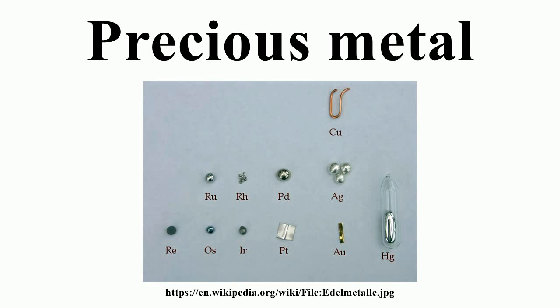The best-known precious metals are the coinage metals, gold and silver. Although both have industrial uses, they are better known for their uses in art, jewelry, and coinage. Other precious metals include the platinum group metals: ruthenium, rhodium, palladium, osmium, iridium, and platinum, of which platinum is the most widely traded.